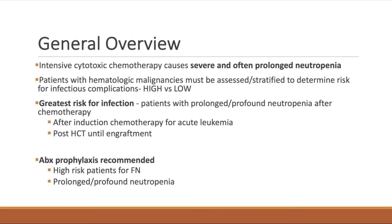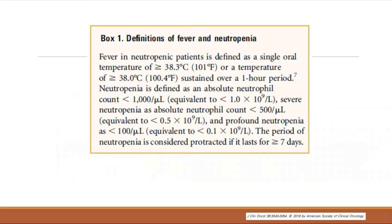Patients with a diagnosis of AML undergoing induction chemotherapy, or patients undergoing stem cell transplant during their period of neutropenia up until they engulf their counts — antibiotic prophylaxis is recommended for high-risk patients. For low-risk patients, the recommendations are against prophylaxis. I will show you those patients at risk for febrile neutropenia.